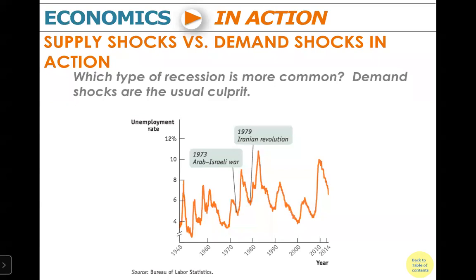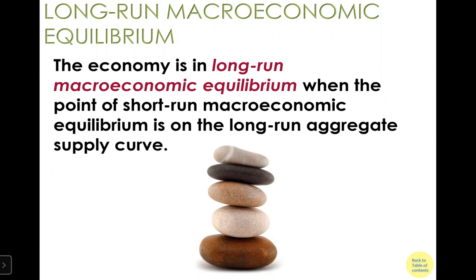Looking at history, we did experience stagflation around a certain time period — the economy was falling at the same time the price level went up. Now we are going to move to long-run macroeconomic equilibrium. The economy is in long-run macroeconomic equilibrium when the point of short-run macroeconomic equilibrium is on the long-run aggregate supply curve.